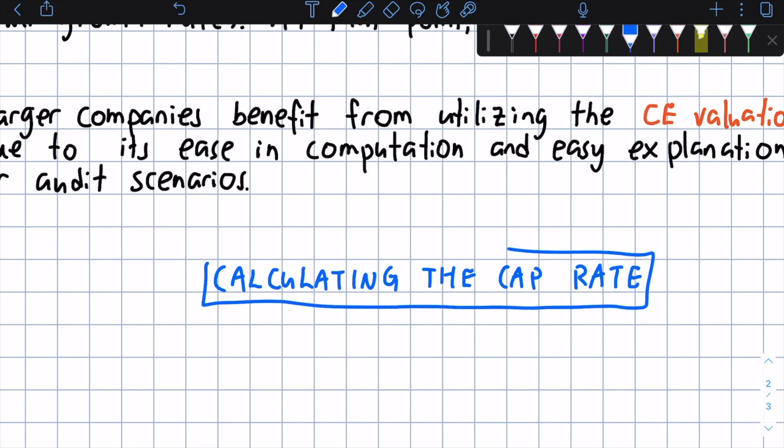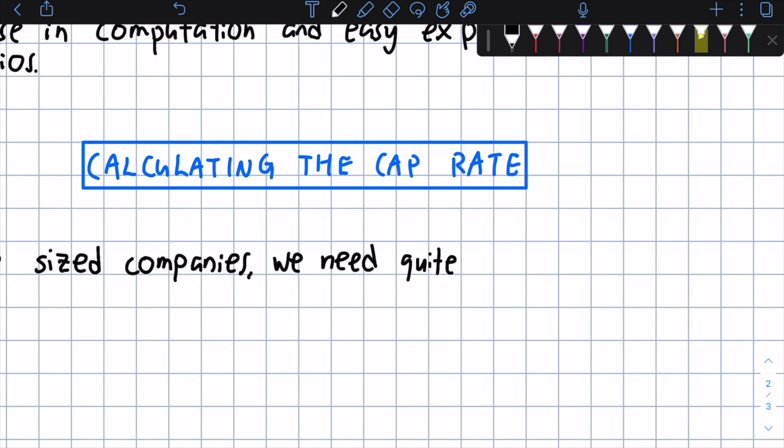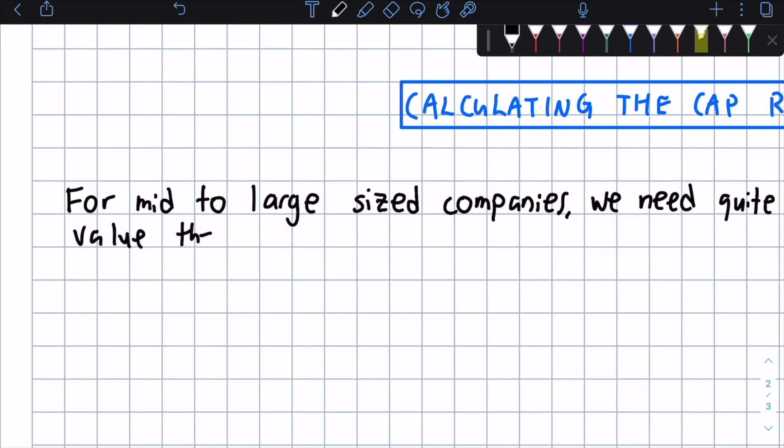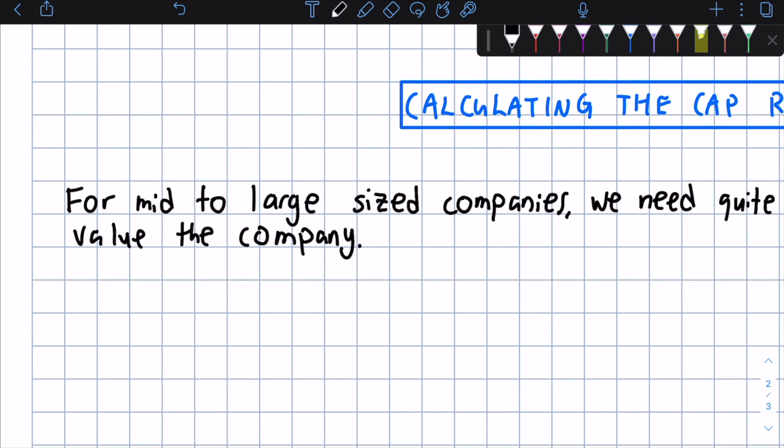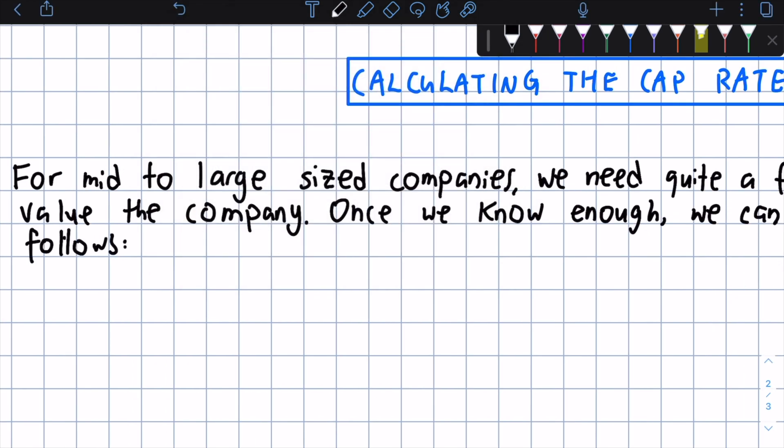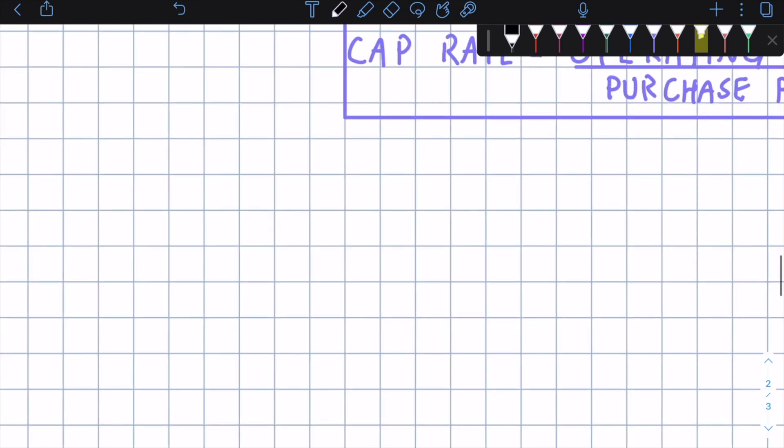Now let's take a look at how to actually calculate the cap rate for a larger business. For mid to large house companies, we need quite a few metrics in order to properly value the company. Once we know enough, we can find the cap rate as follows. And we need these specific things just for the cap rate. The rest is just cash flows that we need. So it's defined as the operating income of a business divided by the price at which the company can be purchased, the total price, if it were in a merger or acquisition.